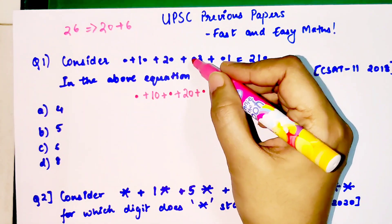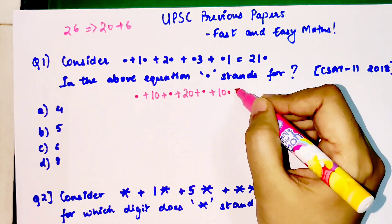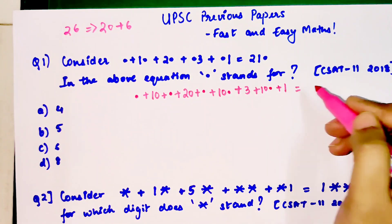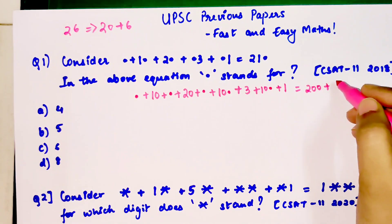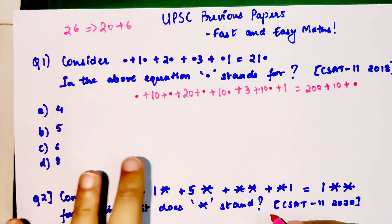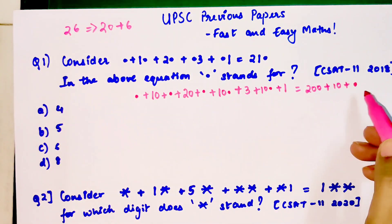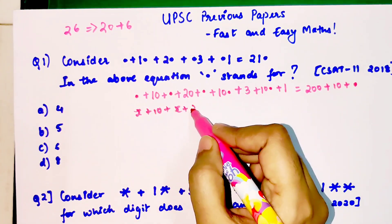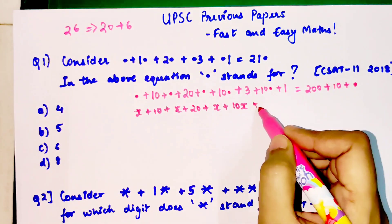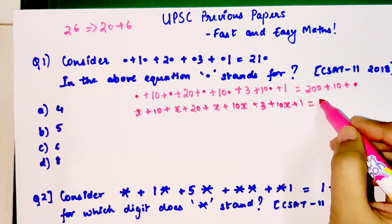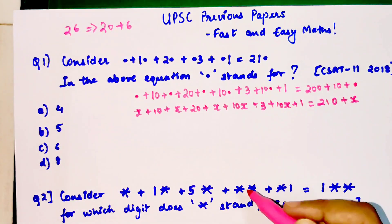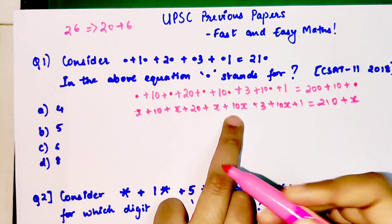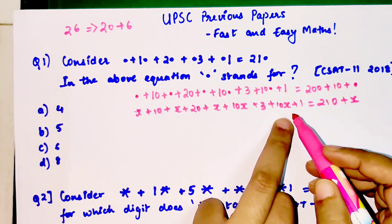The dot on tens place becomes 10 dot + 3, plus 10 dot + 1, and this equals 200 + 10 + dot. If there's confusion, let's write x instead of dot. So we have 10 + x + 20 + x + 10x + 3 + 10x + 1 = 210 + x.